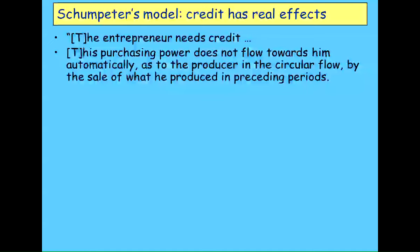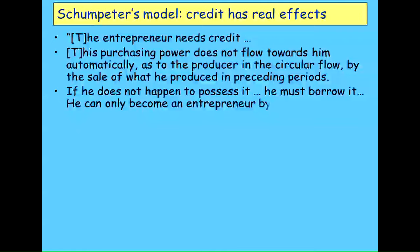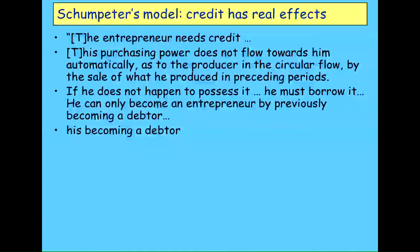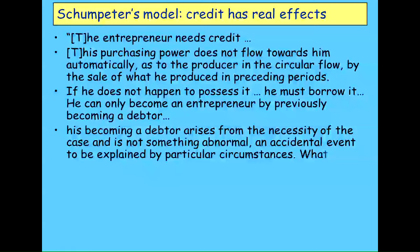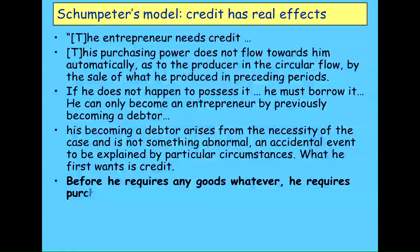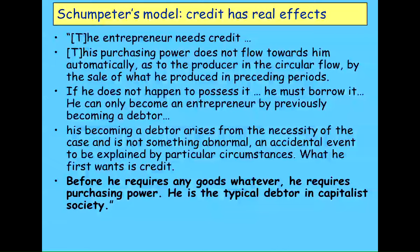That rising debt funds entrepreneurial activity which wouldn't be there except for the increase in debt. The entrepreneur needs credit — Schumpeter's whole focus is upon providing finance to the entrepreneur, because an entrepreneur is somebody who has an idea but doesn't have the money to put it into process as yet. He doesn't have goods to sell, which he can then use to finance a new idea. Schumpeter assumes entrepreneurs are people with ideas but no money — you can only become an entrepreneur by becoming a debtor first. In modern days, this means approaching a venture capitalist to get your money. The classic debtor in a capitalist economy is the entrepreneur.